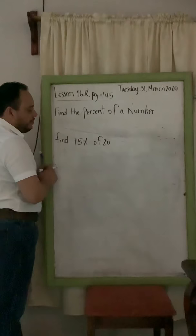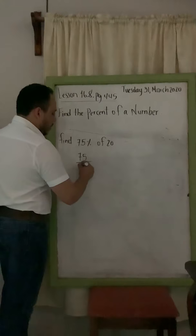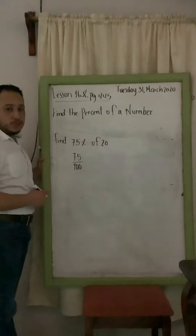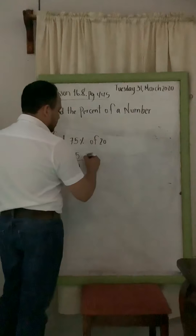So let's change 75% into a fraction. As you know, it will be 75 over 100. And then you only need to simplify the fraction. Both are divisible by 5.